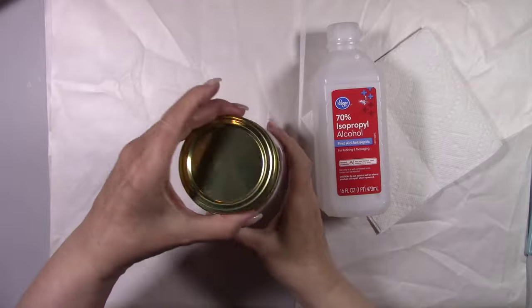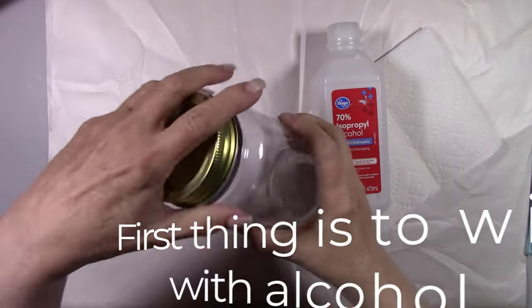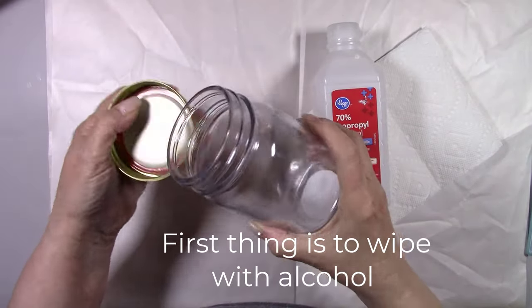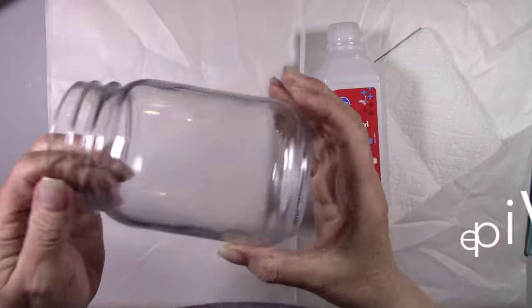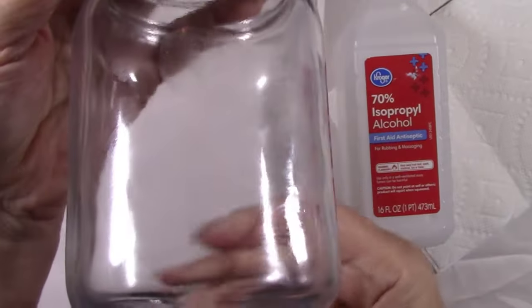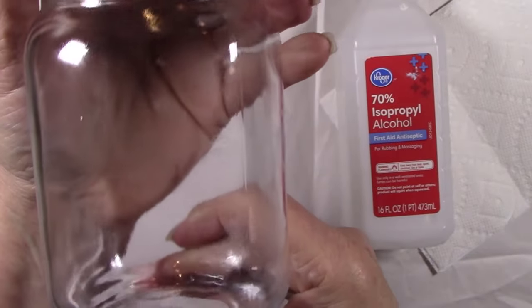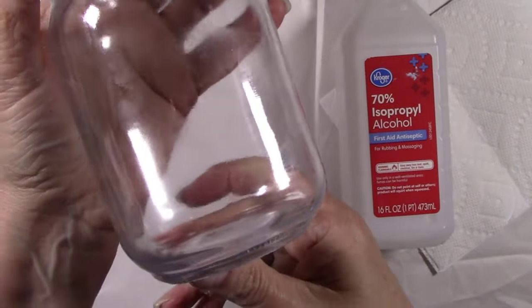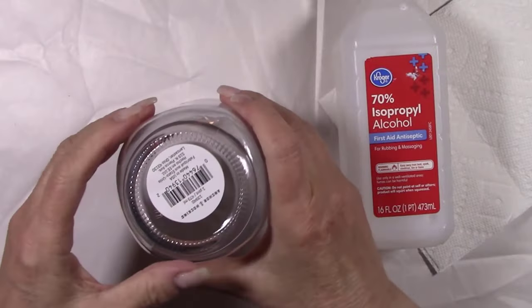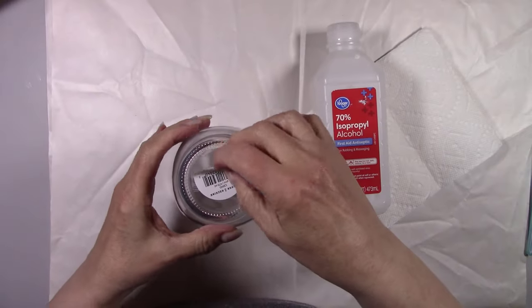The first thing I'm going to do is wipe this jar down with some plain old rubbing alcohol. I don't know how well you can see on camera, but there are some oily fingerprints on this jar. Alcohol will remove fingerprints and any dirt or grime that could be on the jar from the store or from you handling it. Once you wipe the jar down with alcohol, the first coat of paint will stick properly.